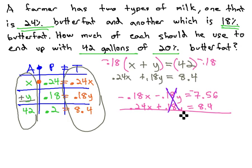And when we combine the equations together, we get 0.6... I'm sorry, 18 minus 24 is 0.06x.